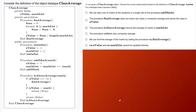Consider the definition of the object data type class average. Class average has two private fields: the a_value and the mark_list. It also has a private procedure called find_average that does not return anything but calculates the average marks of the entire mark_list. Then we have three public procedures — the first is initialize, which sets a_value to negative one and mark_list to an empty list.